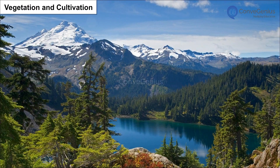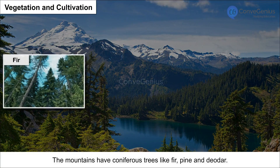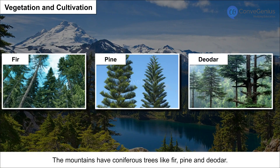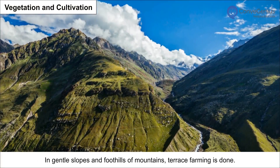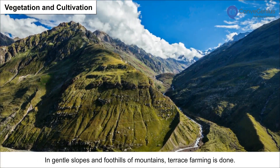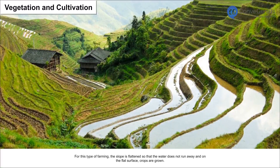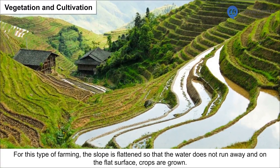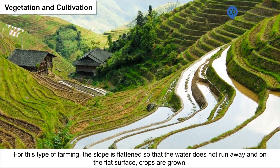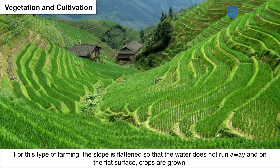Vegetation and Cultivation. The mountains have coniferous trees like fir, pine and deodar. In the gentle slopes and foothills of mountains, terrace farming is done. For this type of farming, the slope is flattened so that the water does not run away and on the flat surface crops are grown.